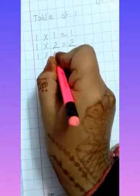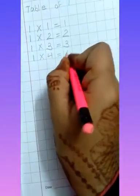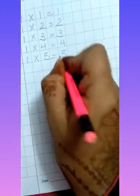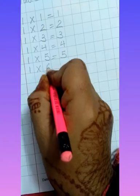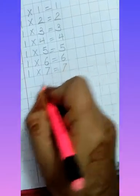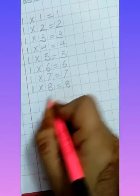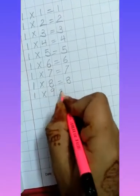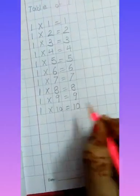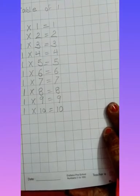One threes are three, one fours are four, one fives are five, one sixes are six, one sevens are seven, one eights are eight, one nines are nine, one tens are ten. Today's homework: numbers 1 to 50 and the table of one in your maths exercise line book.